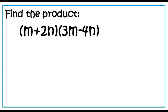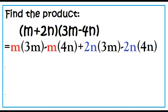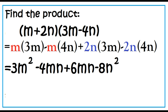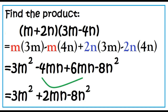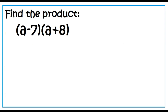The quantity M plus 2N times the quantity 3M minus 4N: M times 3M, minus M times 4N, plus 2N times 3M, minus 2N times 4N, equals 3M squared minus 4MN plus 6MN minus 8N squared. Combining similar terms, the final answer is 3M squared plus 2MN minus 8N squared.